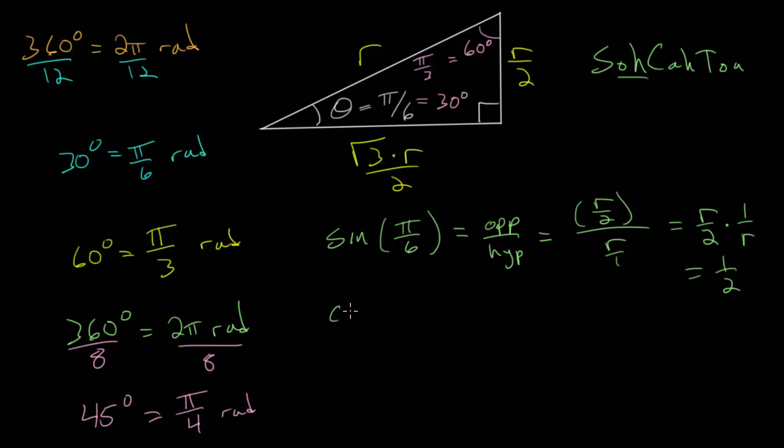And likewise, we can look at the cosine of pi over 6. And that would be the adjacent, this root 3 over 2 times R, all divided by R. Notice the R's cancel out again, and we get root 3 over 2.